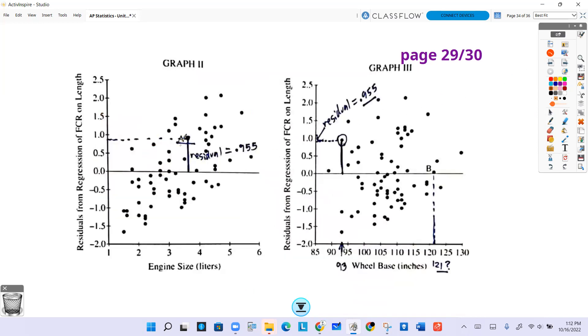So indeed, that's going to have that same residual of 0.955 as we calculated in part A. And seeing that 93 is our wheelbase, you have it right there.